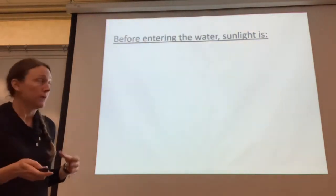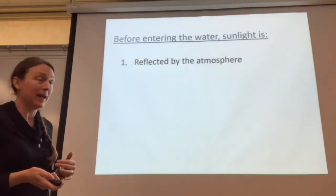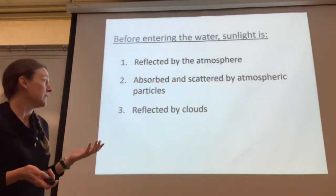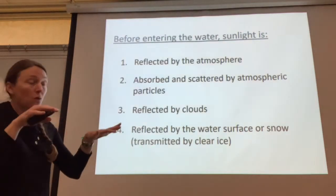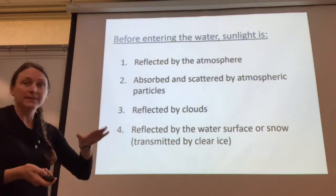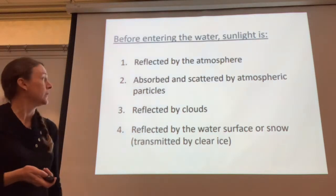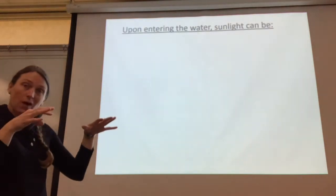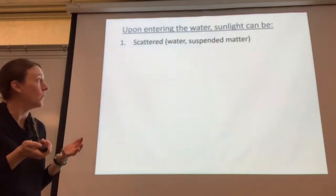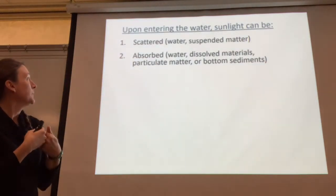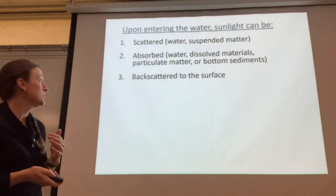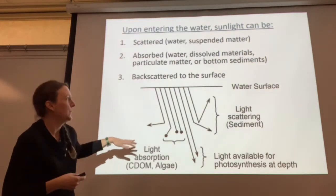Before even entering the water, sunlight can be reflected back to space from the atmosphere, absorbed or scattered by atmospheric particles, reflected by clouds, or reflected by the surface of the water or snow. Light is usually transmitted rather than reflected by clear ice, so ice can allow light to penetrate through. Once it's in the water, light can be scattered by the water itself or suspended materials, absorbed by the water, absorbed by dissolved or particulate materials, bottom sediments, or back-scattered to the surface.